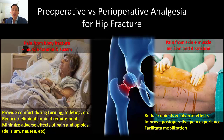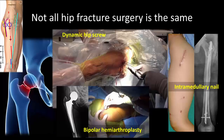On the other hand, blocks in the intraoperative phase must take into account the actual surgical incision and trauma, and the fact that postoperative mobilization will be an important goal. There are several different operations that can be done to repair a fractured hip, and they involve quite different skin incisions, muscular dissections, and bony instrumentation. The source of pain in each will therefore be quite different.